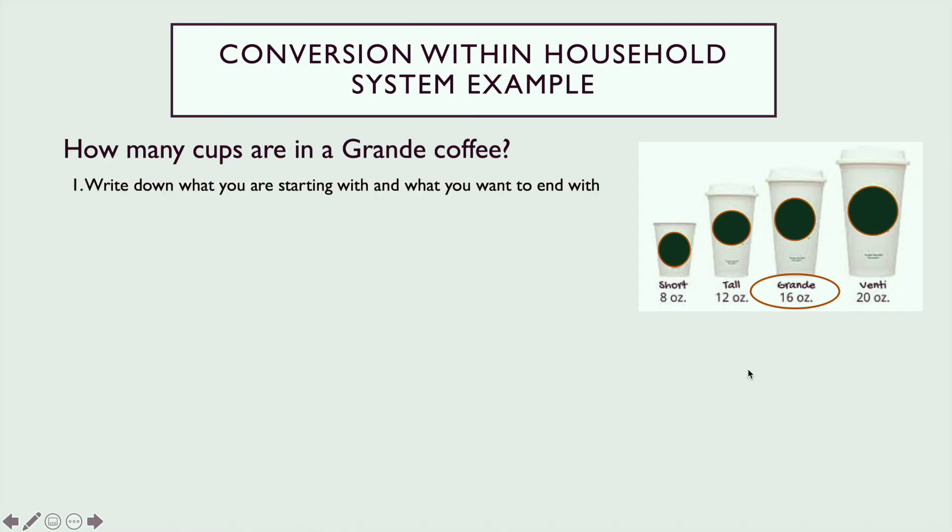Step one, when we're doing dimensional analysis you want to write down what you're starting with and what you want to end with. In this case we are starting with ounces, so we started with the 16 ounces, and we want to get to cups.